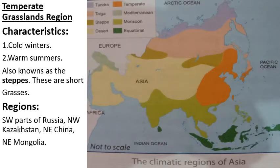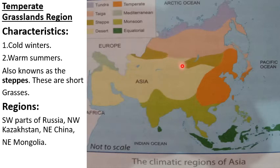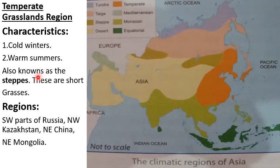Temperate grasslands region. This region is shown on the map with a different shade of green. This area covers the southwest part of Russia, northwest Kazakhstan, northeast China, and northeast Mongolia. The characteristics of the climate are cold winters and warm summers. These grasslands are also known as steppes — short grasses.